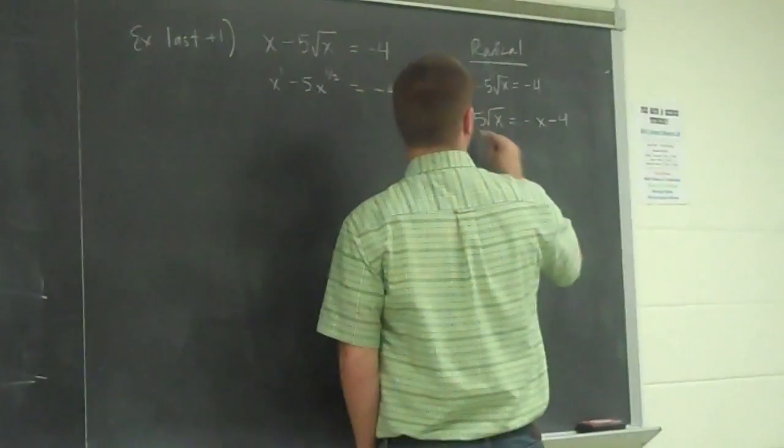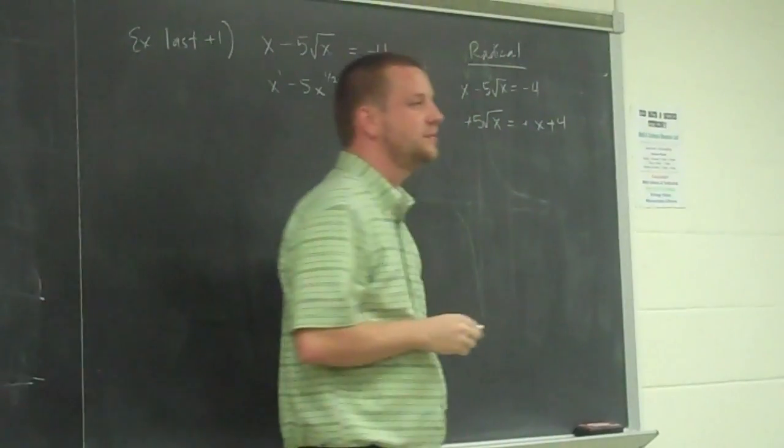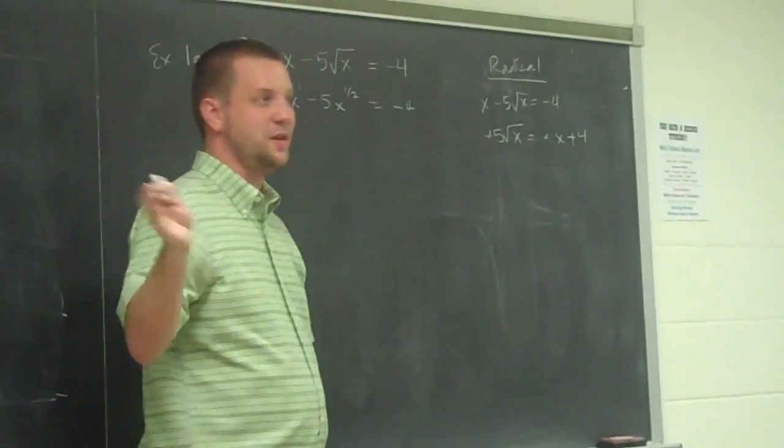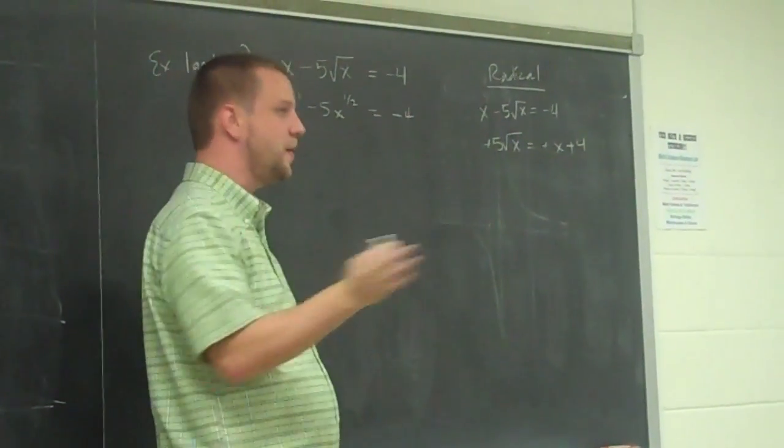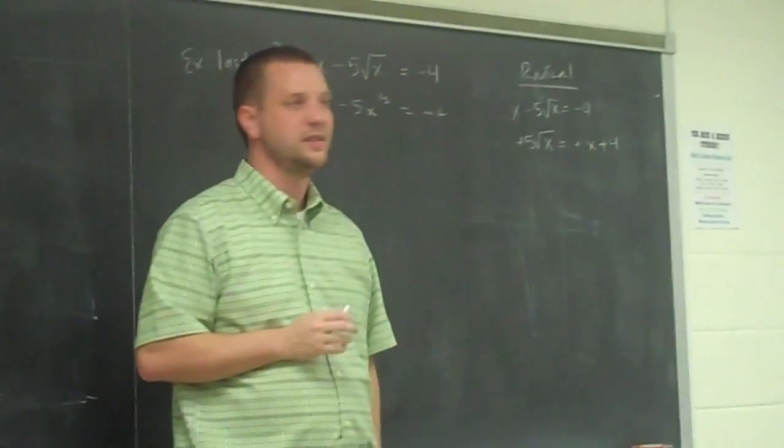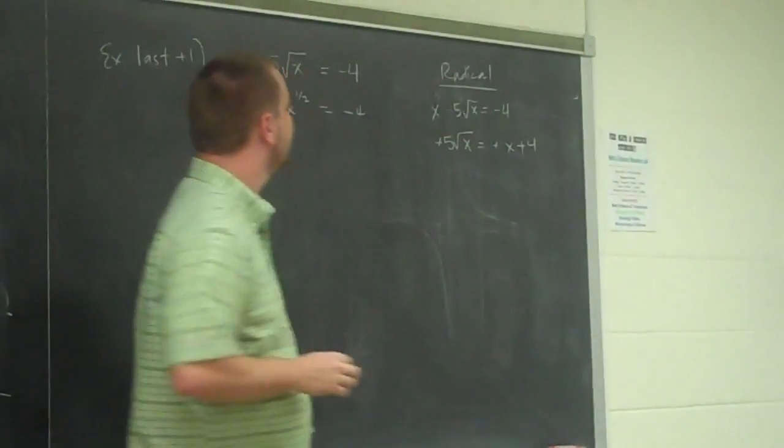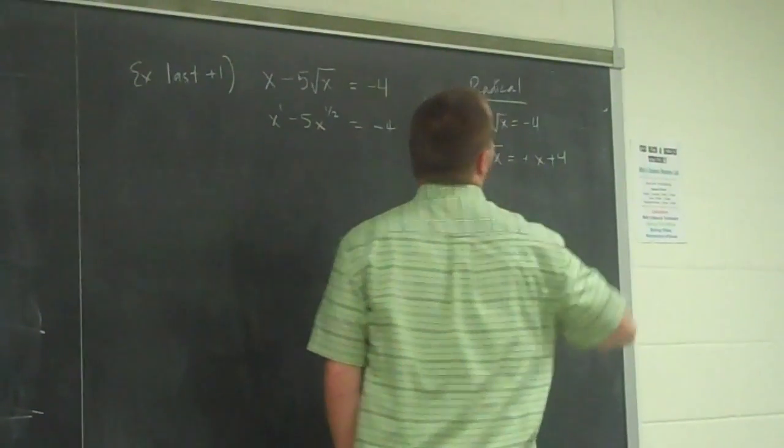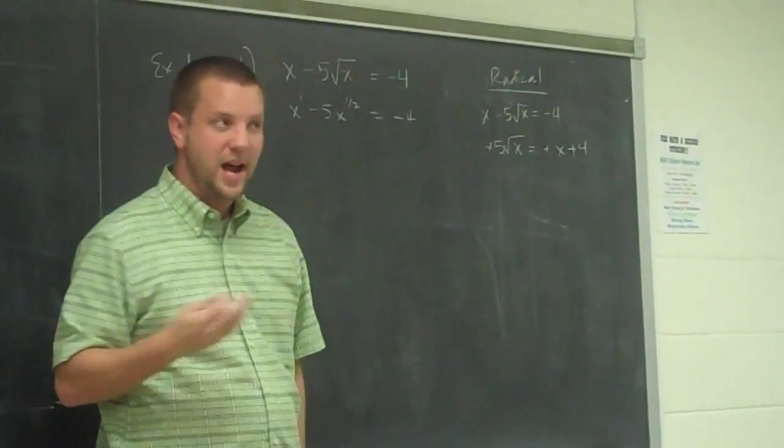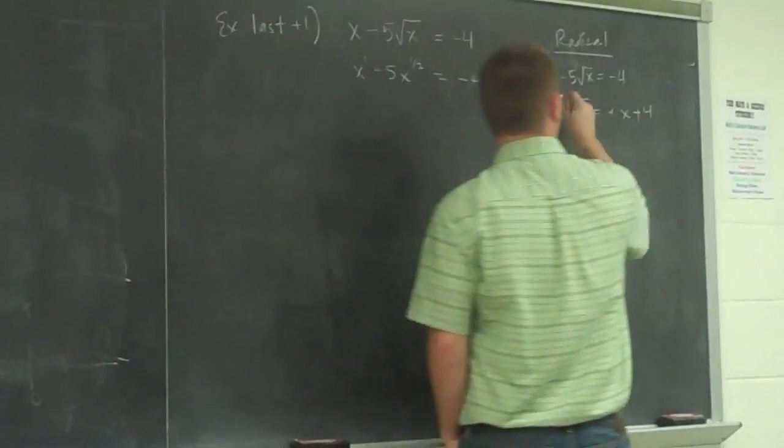And that way at least we have positiver numbers. So if I go through and divide by negative 1, or multiply through by negative 1, I am just changing my signs, aren't I? Okay. So if I change my signs, and now I square both sides because I don't want fractions.